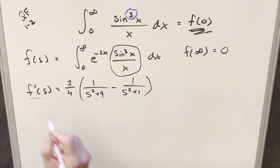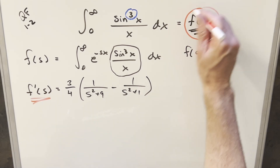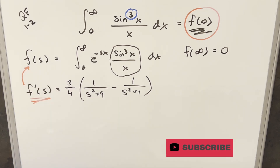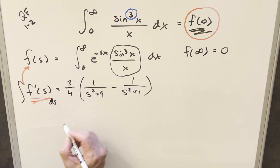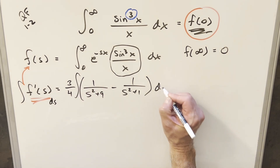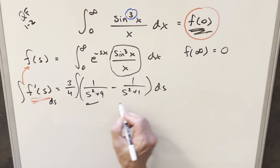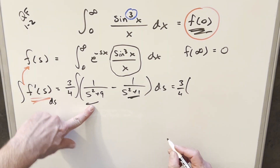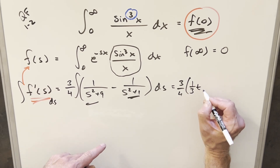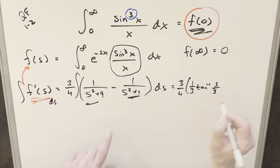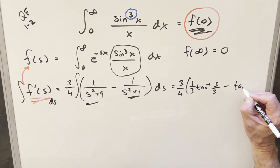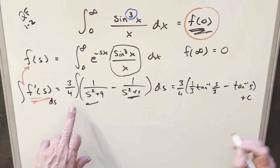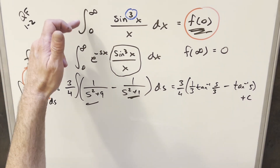Now we have our f′(s) and we want to get back to f(0). To go from f′(s) to f(s), we integrate with respect to s on both sides. The 3/4 is a constant, and both integrals use the arctan formula: the integral of 1/(s² + 9) is (1/3) arctan(s/3), and the integral of 1/(s² + 1) is arctan(s). So f(s) = (3/4)[(1/3) arctan(s/3) − arctan(s)] + C. We still have a constant C because this was an indefinite integral.